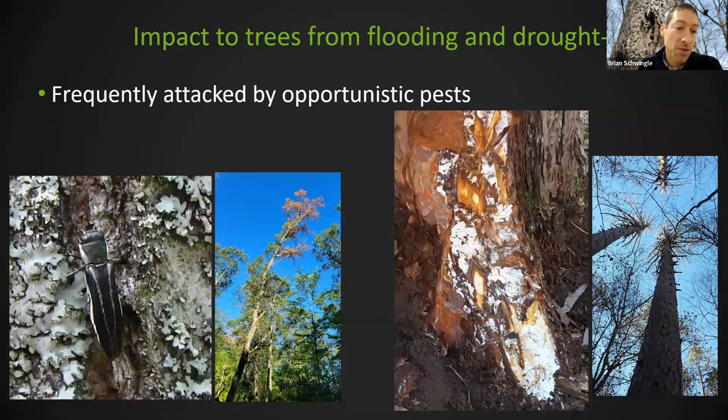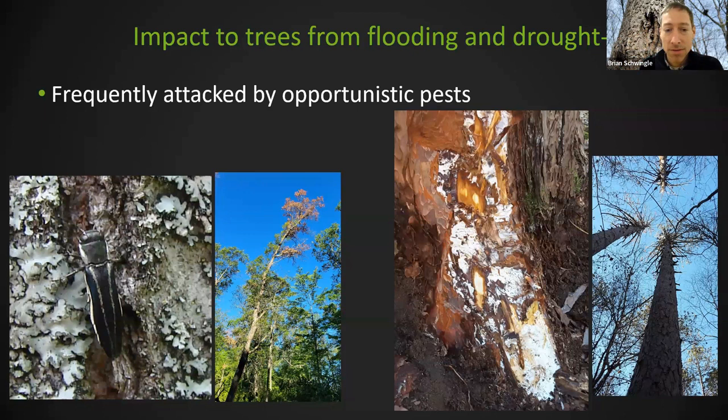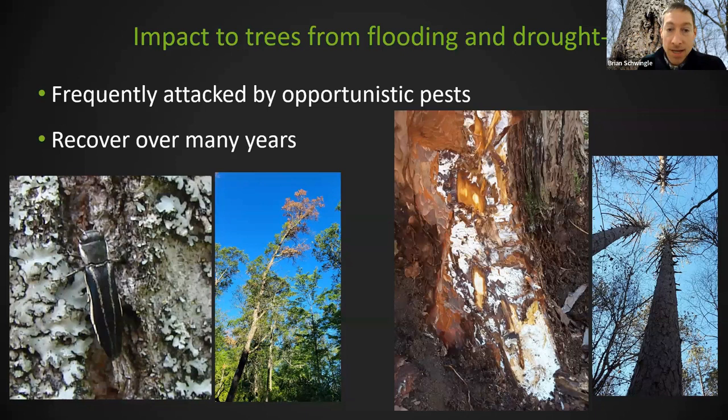That's two-lined chestnut borer on the left — an adult. It's the most common insect pest of all our oak species. The white stuff on the root flare of a red pine in the second photo from the right — I've taken the bark off — that's a fungus called armillaria.